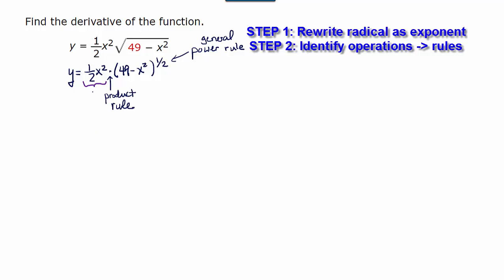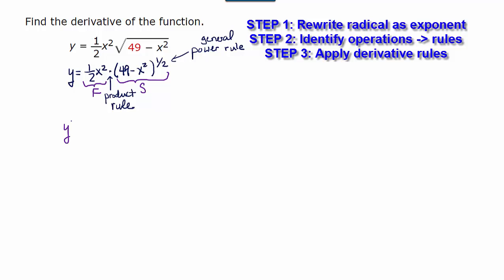So here we have this first quantity being multiplied. I'm going to call that capital F and we have this second quantity being multiplied and it's in the process of dealing with this second quantity that we end up having to use the general power rule. So I'm going to go ahead and write down my product rule which says that the derivative of y is going to be the first function times the derivative of the second plus the second function times the derivative of the first.